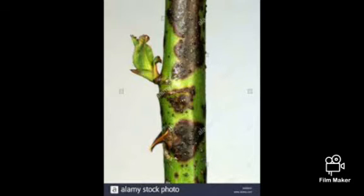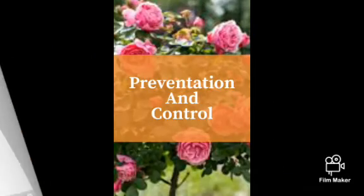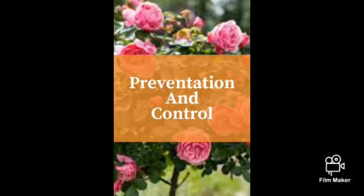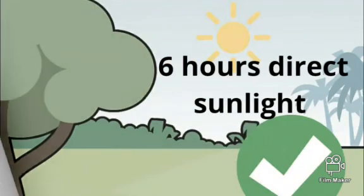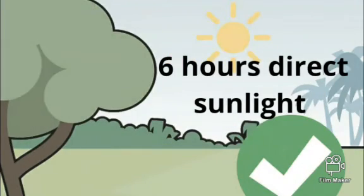The fungus can also infect young canes, causing dark purple or black blisters on the cane, and even the flowers may show some red spotting. Prevention and control: Keep your rose plant under direct sunlight. Roses need at least 6 hours of direct sunlight.